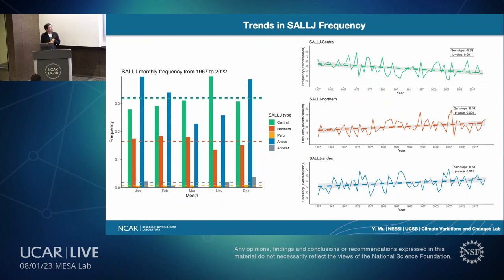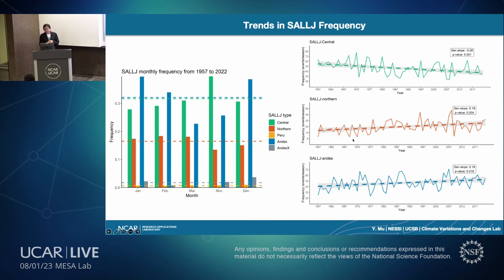Looking at trends in low-level jet frequency: on the left is the monthly frequency for each type, and on the right are frequency trends for the three major types — central, northern, and Andes. Central low-level jet is decreasing in frequency over the time series, while northern and Andes are increasing. All trends pass the significance test.